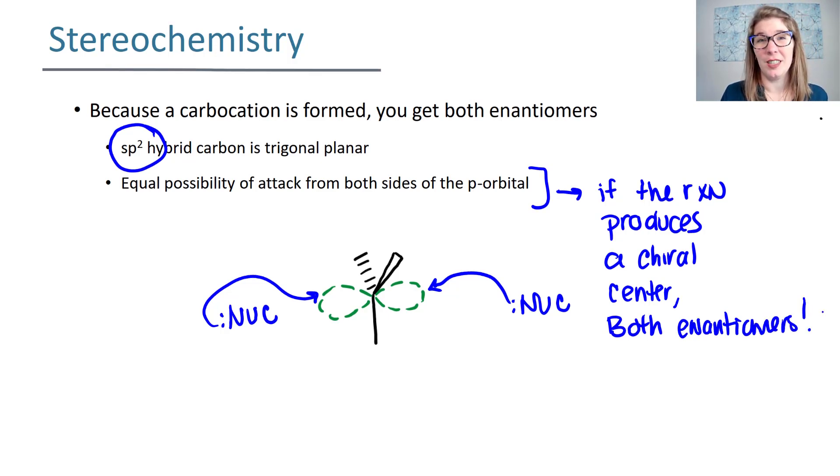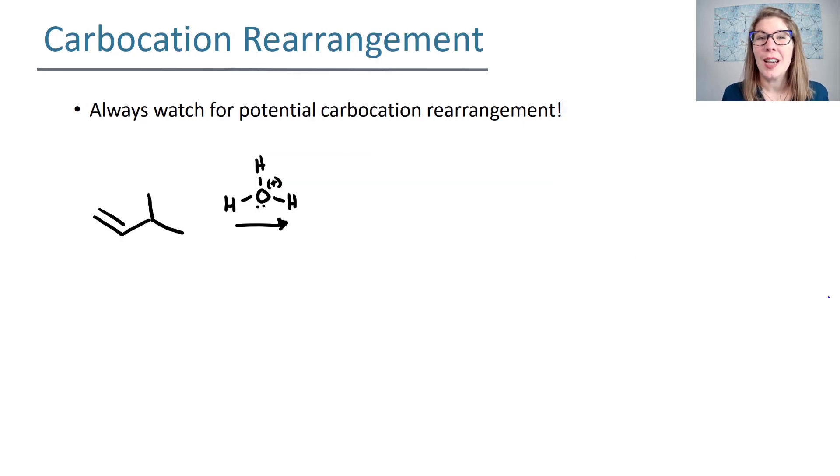Now let's look at carbocation rearrangements. Because we have a carbocation as an intermediate in our mechanism, we always need to be on the lookout for potential carbocation rearrangements. Let me show you what I mean by illustrating this in another mechanism. The first step, remember, is your pi bond attacking the hydrogen of your acid catalyst. This then breaks and the excess electrons go onto the oxygen. Now, when we form your carbocation, your hydrogen is going to add to this position because that gives you a secondary carbocation.